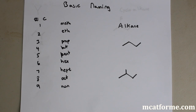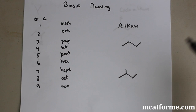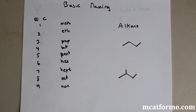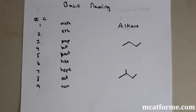Today is an OCHEM lecture and we're going to go over naming. The first thing we need to know is how many carbons — we need to be able to count carbons and know their prefixes. We need to know one through nine; that's all we will need for the MCAT. It can go more than nine, but for the MCAT we don't need to know past that.